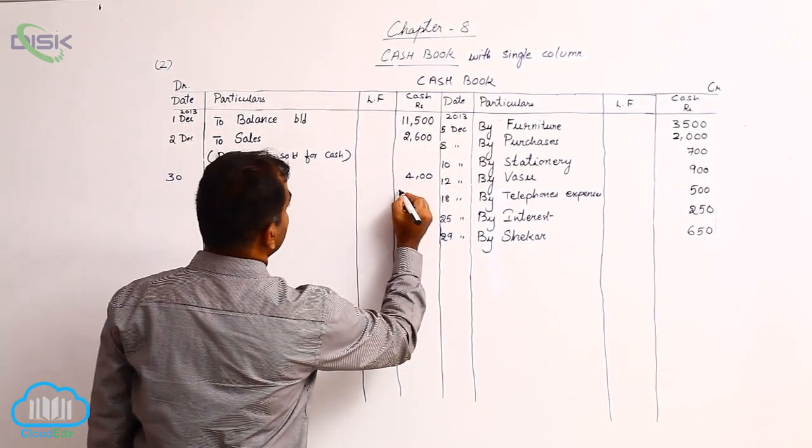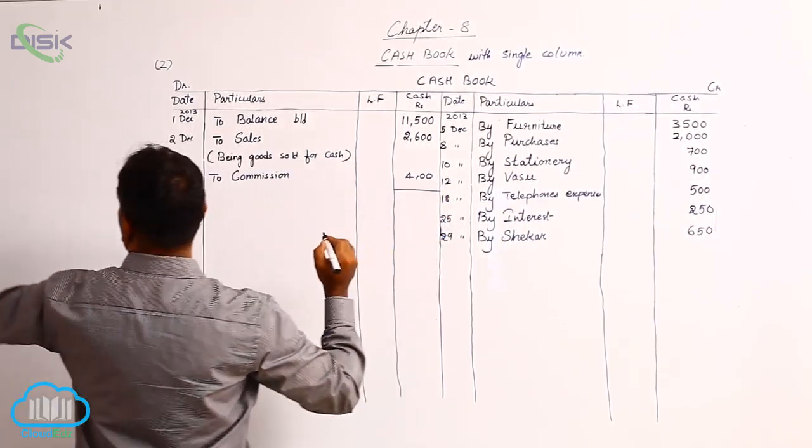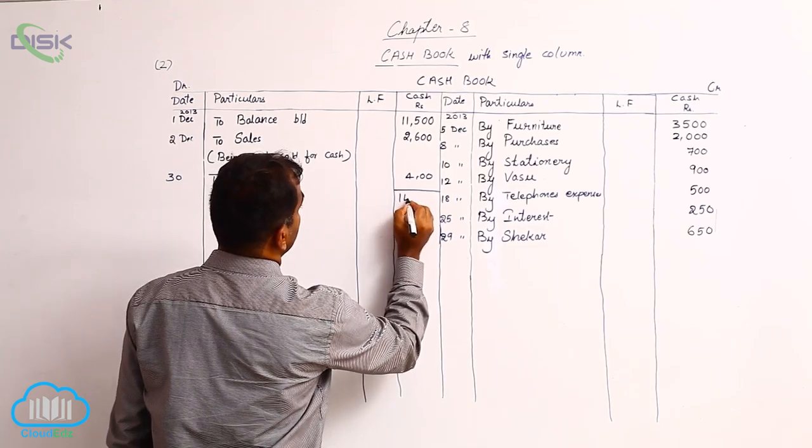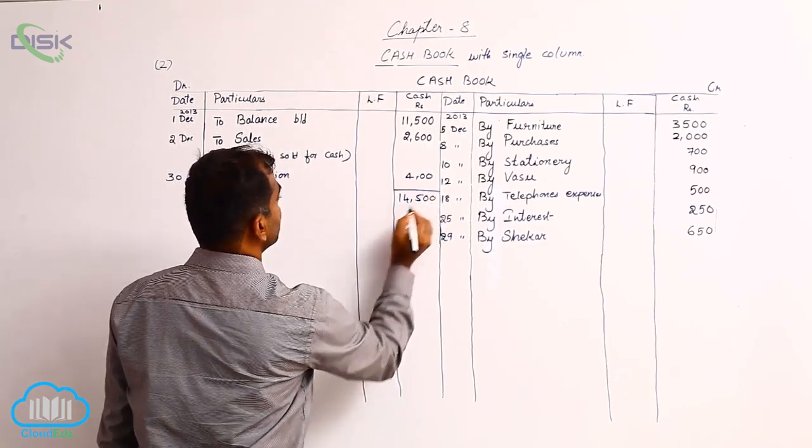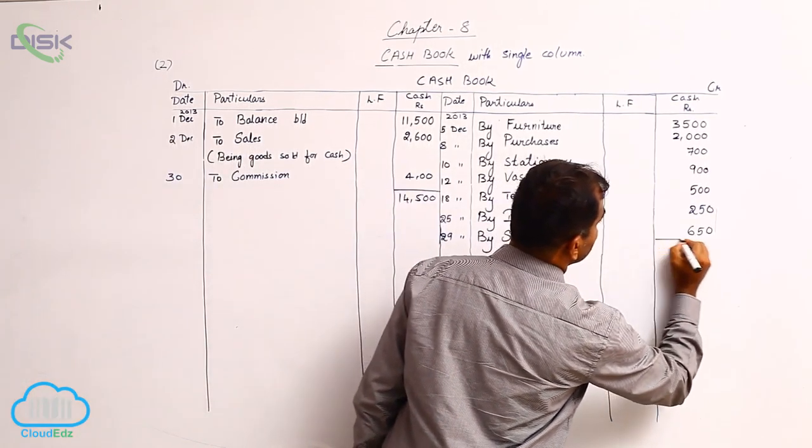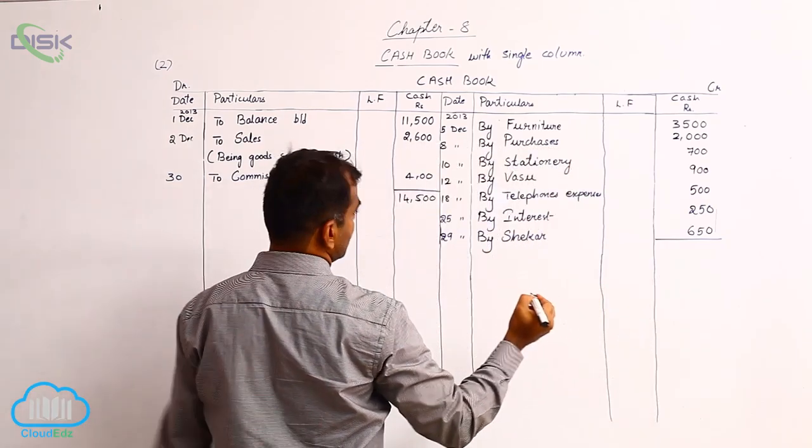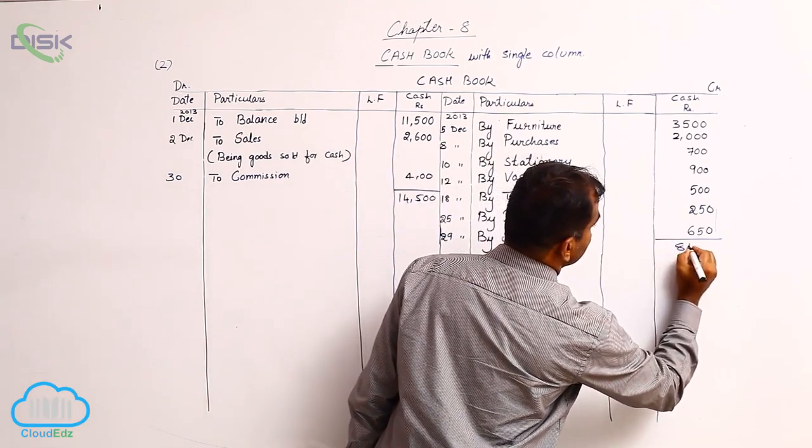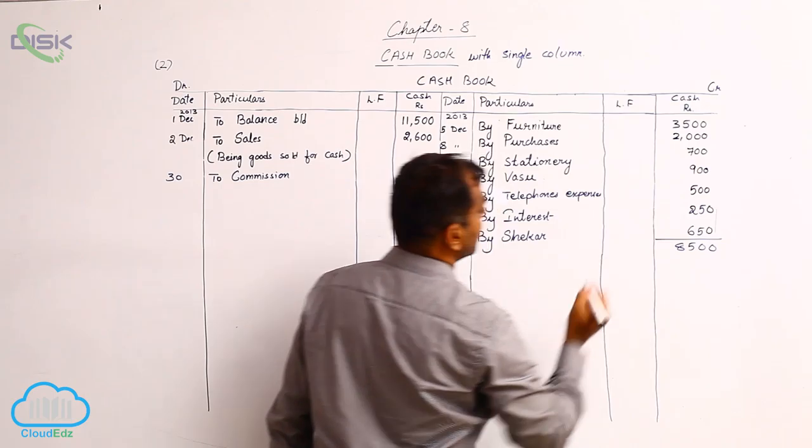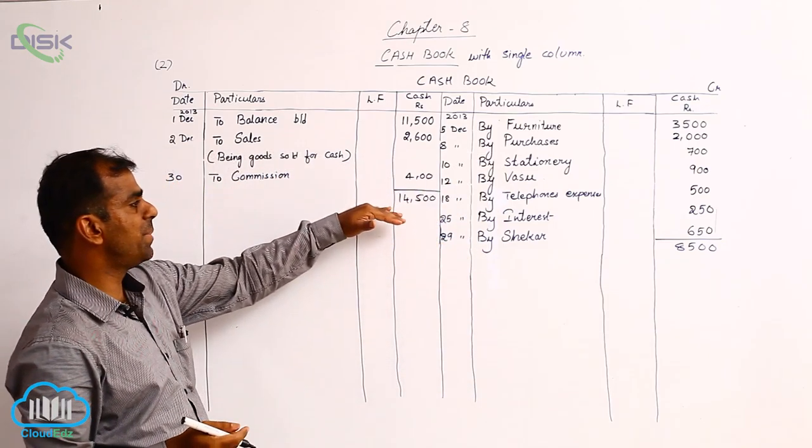The total on the debit side comes to 14,500. Similarly, on the credit side, the total comes to 8,500. Now let us compare both the totals.